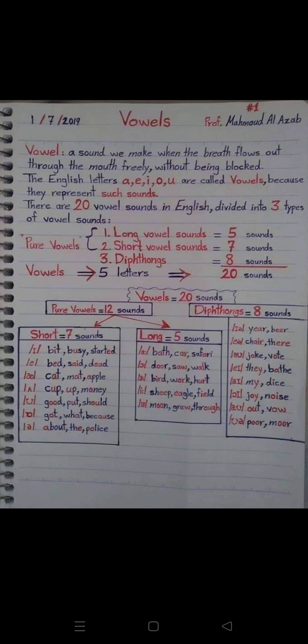Long vowel sounds are 5, short vowel sounds are 7, and diphthongs are 8, totaling 20 sounds. Five letters produce 20 sounds.